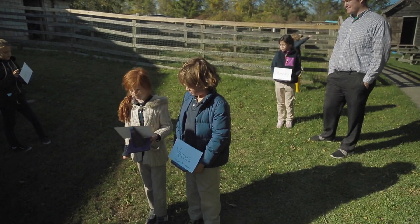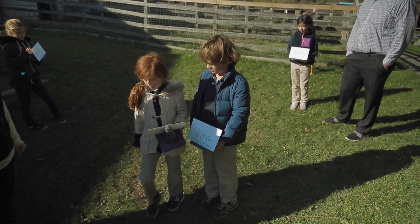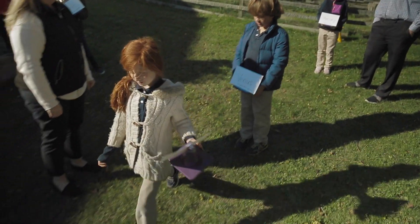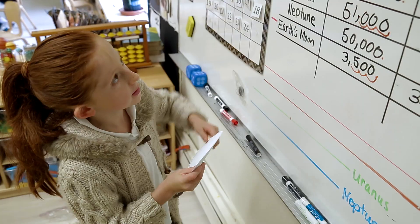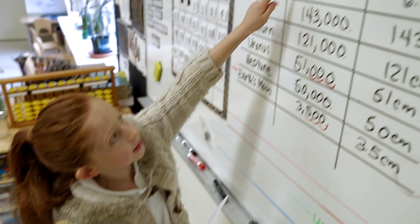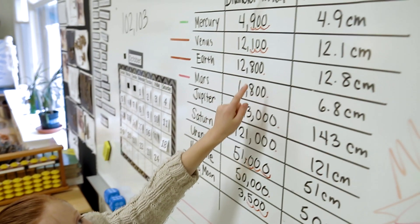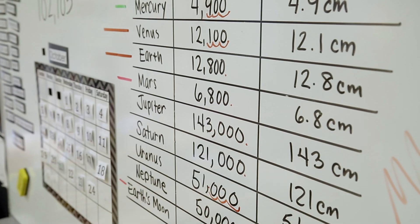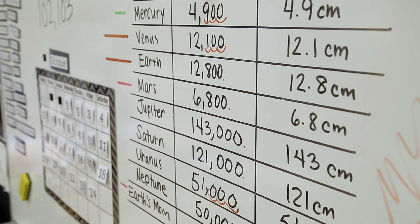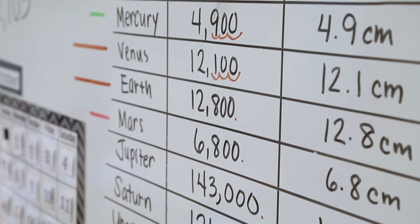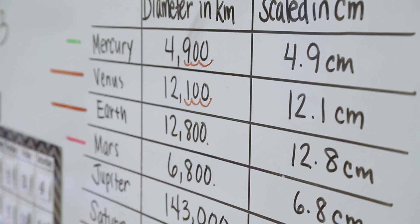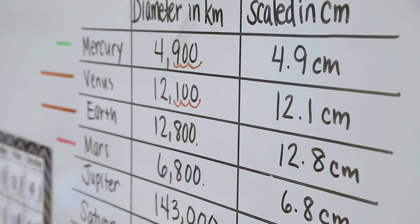Go ahead. I can't believe how far away the planets are. For Mercury, it would be 4,900 — but we're just doing it to 4.9.